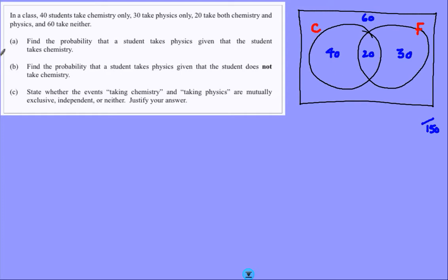Okay, my problems. First is a conditional probability: probability of physics given that you take chemistry. If you take chemistry, you're in the chemistry bubble. You are one of 60. The probability of being in physics in there, well there are 20 physics students in that chemistry bubble. So one third.